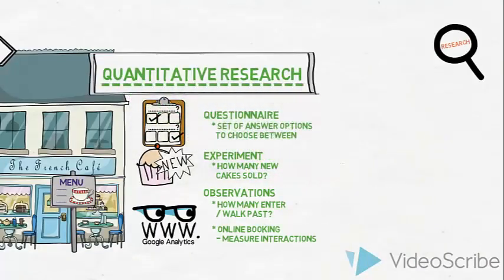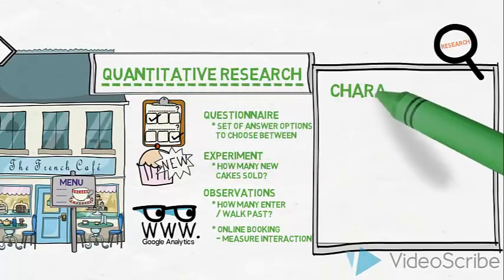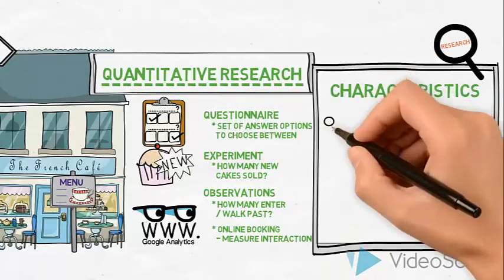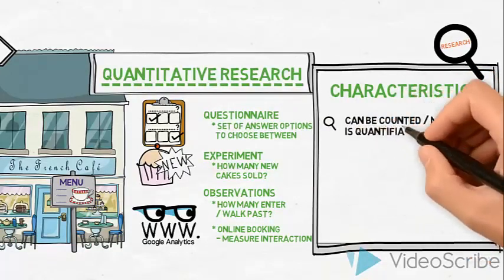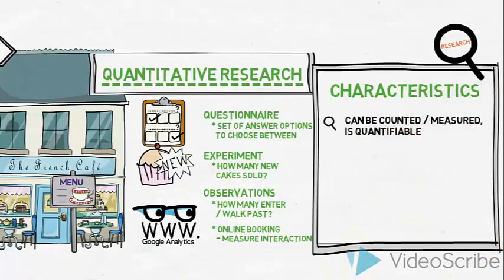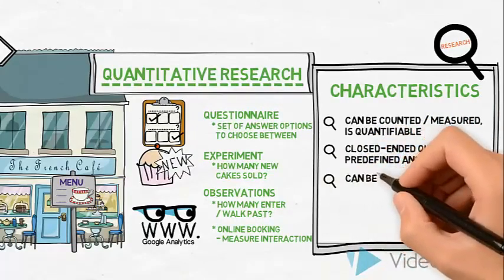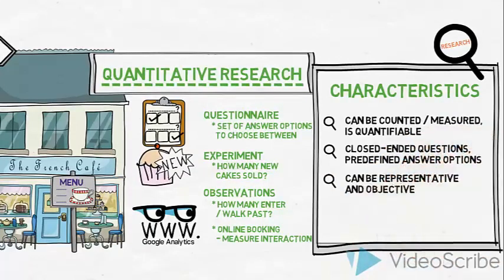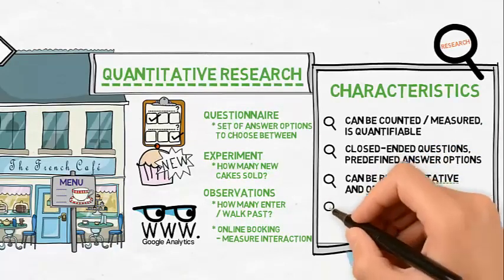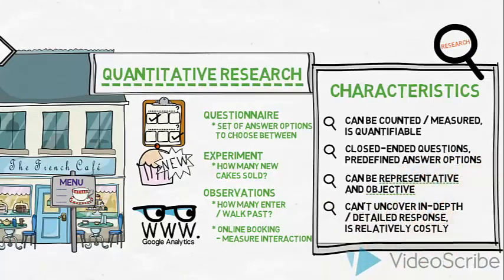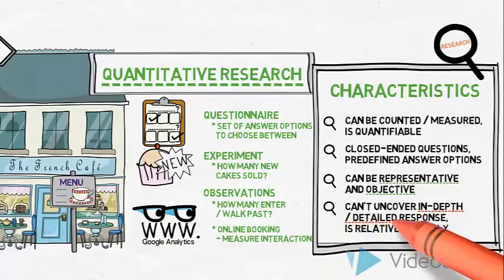We call this type of research quantitative research. Quantitative data can be counted and/or measured — it is quantifiable. It is based on asking closed-ended questions, for example by providing predefined answer options in a questionnaire. The benefits of quantitative data are that it can be representative of the target group since a larger number of respondents can be covered, and that it is objective. However, the disadvantages are that it does not uncover in-depth motivations, detailed reasons or underlying feelings and attitudes, and some types of quantitative research can be fairly costly to carry out.